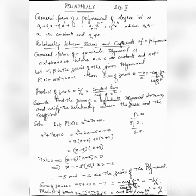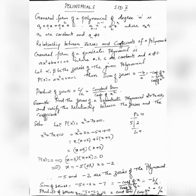Let alpha and beta be the zeros of the given polynomial. So, as we know, p(x) = ax² + bx + c = 0. Then the sum of zeros is equal to -b/a, that means minus the coefficient of x divided by the coefficient of x². The product of zeros is equal to c/a, that is the constant term divided by the coefficient of x².